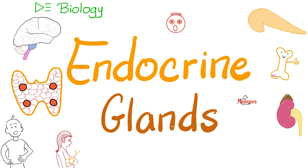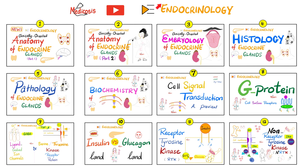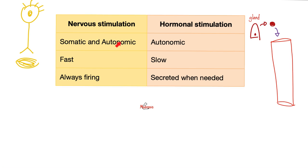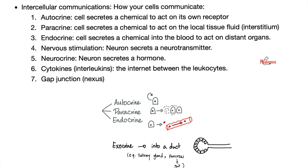What does endocrine gland mean? It's a gland that secretes its secretion directly into the bloodstream. In the last video, we talked about the difference between nervous stimulation versus hormonal stimulation, an exocrine gland versus endocrine gland. Exocrine gland has a duct — it secretes its secretion to a nearby structure. However, an endocrine gland is ductless: it dumps the secretions into the bloodstream.